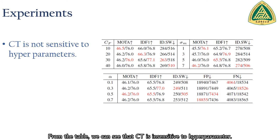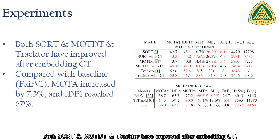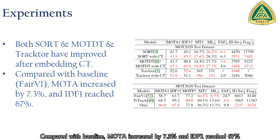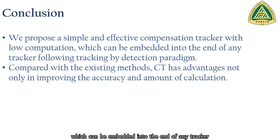From the table, we can see that CT is insensitive to hyperparameters. Both JDE and FAIR V1 with CT have been improved. Both SORT and MOTDT in TRAKTOR have improved after embedding CT. Compared with the baseline, MOTA increased by 7.3% and IDF1 reached 67%. We propose a simple and effective compensation tracker with low computation, which can be embedded into the end of any tracker following the tracking-by-detection paradigm.